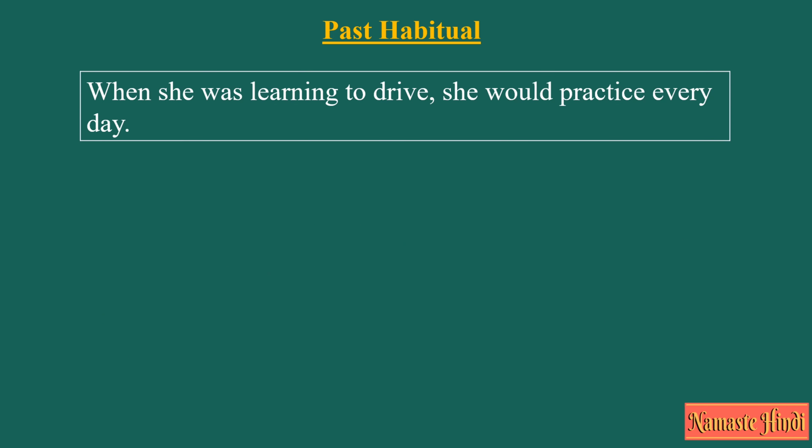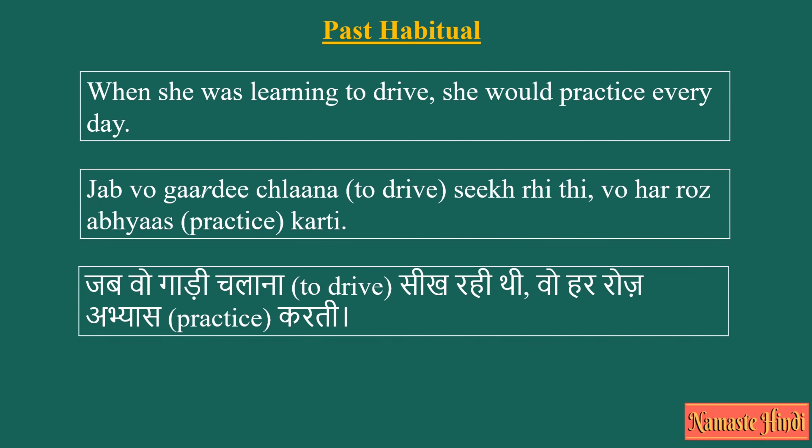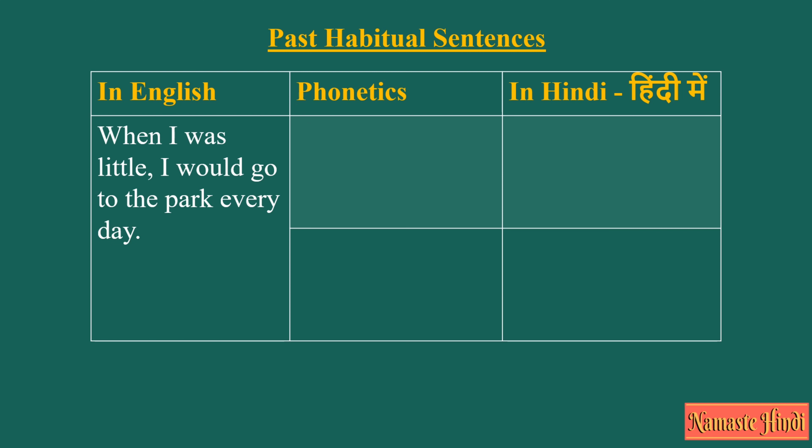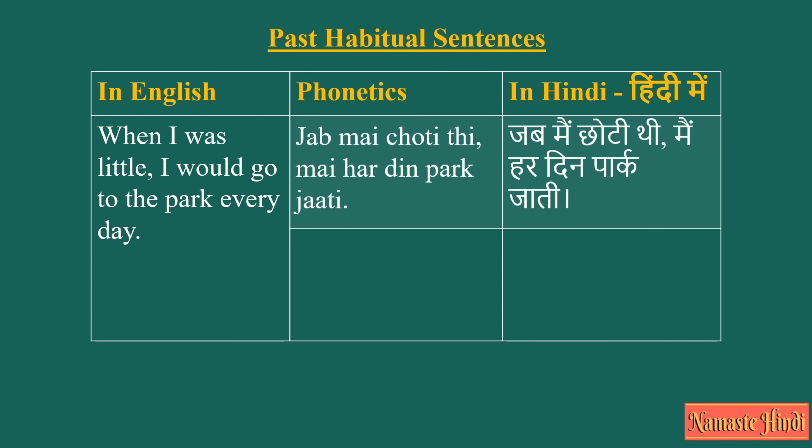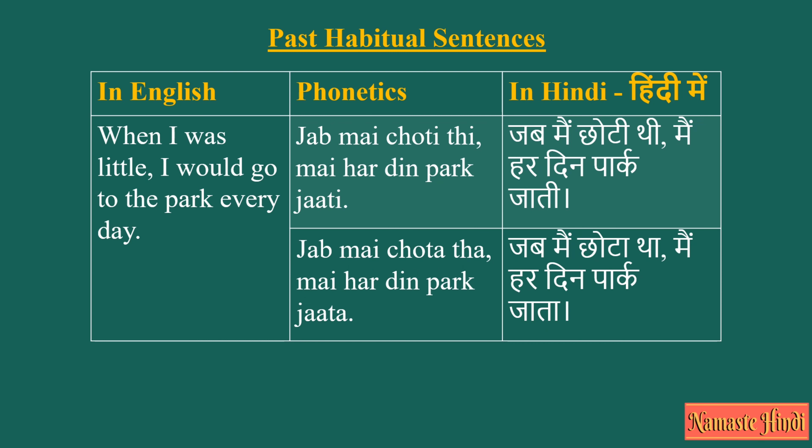When she was learning to drive, she would practice every day — Jab wo gaari chalana seekh rahi thi, wo har roz abhyas karti. In Hindi, every day can be 'har roz' or 'har din'. When I was little, I would go to the park every day — said by a female: Jab main chhoti thi, main har din park jaati. Said by a male: Jab main chhota tha, main har din park jaata.